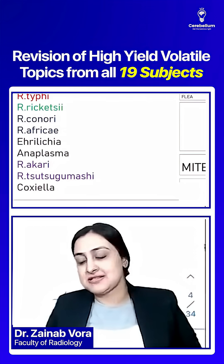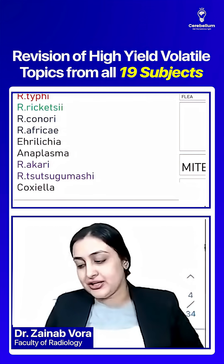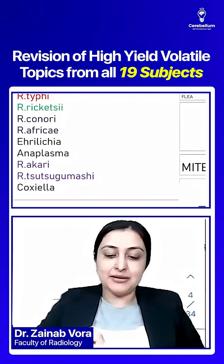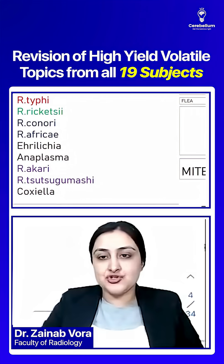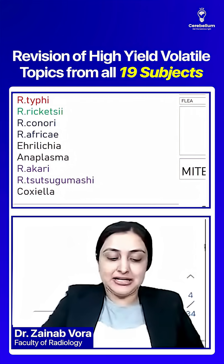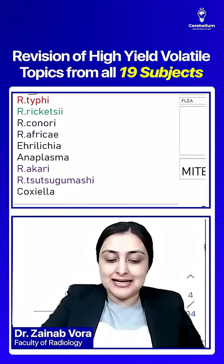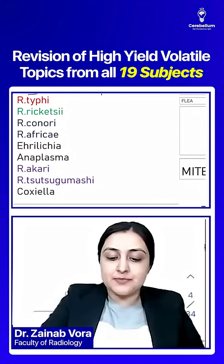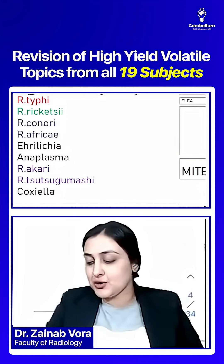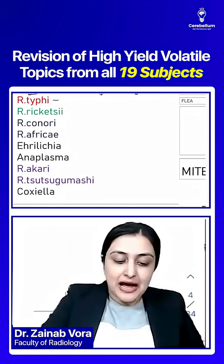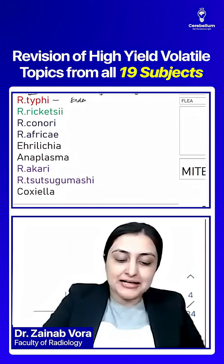We're going towards this beautiful list for Rickettsia. First we have two Rickettsia: R. prowazekii causes epidemic typhus, and R. typhi causes endemic typhus.